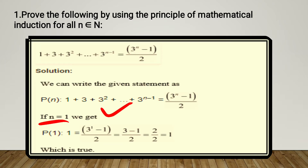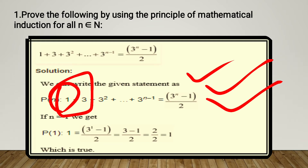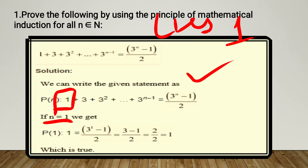If n equals 1, we get the first term only. When we keep n=1, the first term is just 1, so LHS's answer is 1. Now what do we keep in RHS? We put 3's power as 1, so it becomes (3^1 - 1) / 2. 3 minus 1 is 2, and 2 divided by 2 is 1.